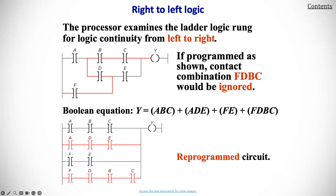Right-to-left logic: the processor examines the ladder logic rung for logic continuity from left to right. The program has shown that contact combination FDBC would be ignored. We have the Boolean equation here, and we would go ahead and reprogram the circuit as shown.